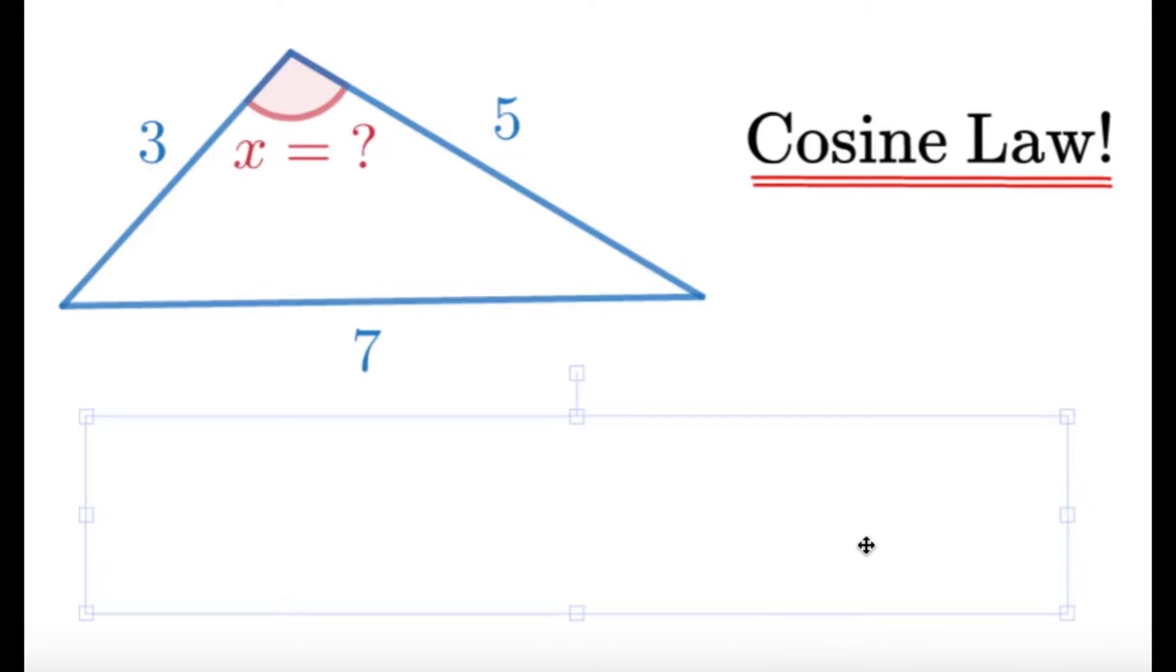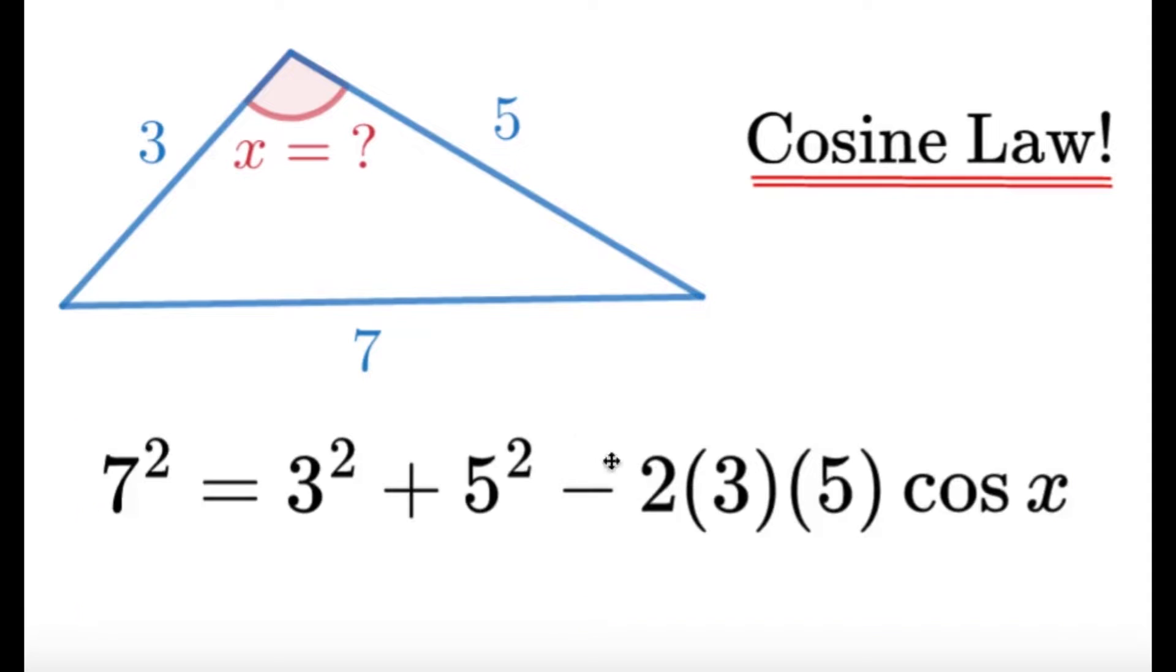So from the cosine law, we will be able to form the following. The square of the side opposite the angle, so in this case it's the 7, is going to be equal to the sum of the squares of the other two sides. The 3 squared plus 5 squared.